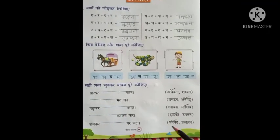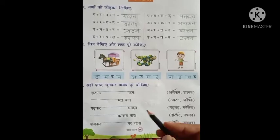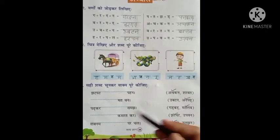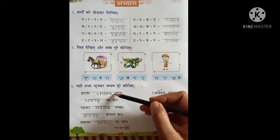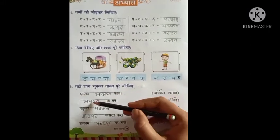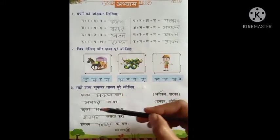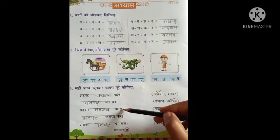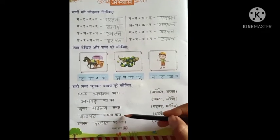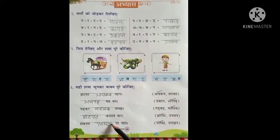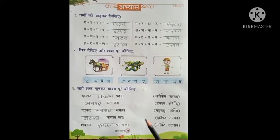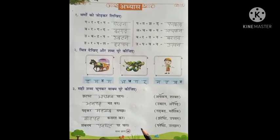Now write here. I have written this here: Jhat pat achkan pehan. An par mad ban. Par kar matlab samaj. Jhat pat kasrat kar. Shabnam pan ghat par chal. So, do this in your book.